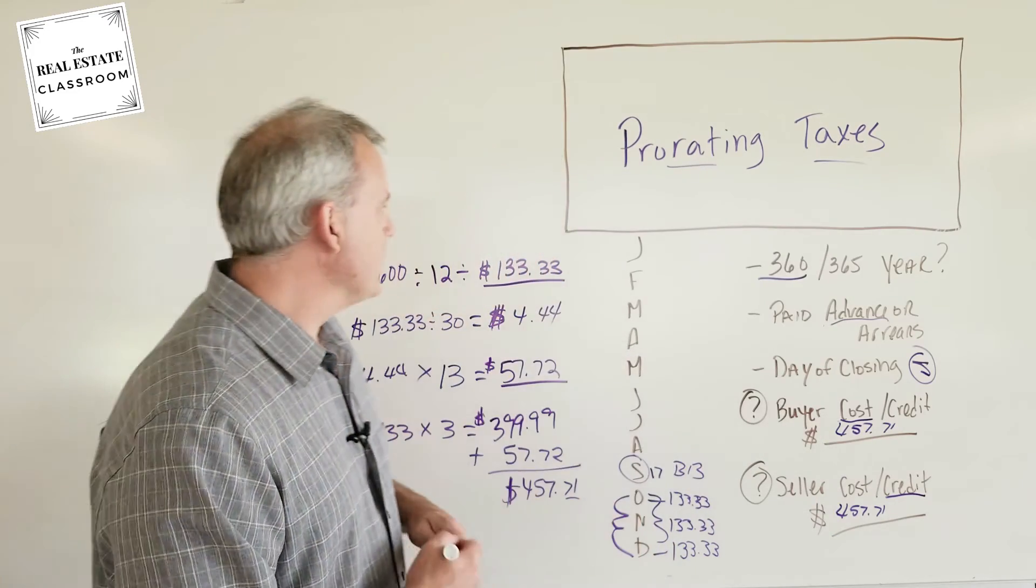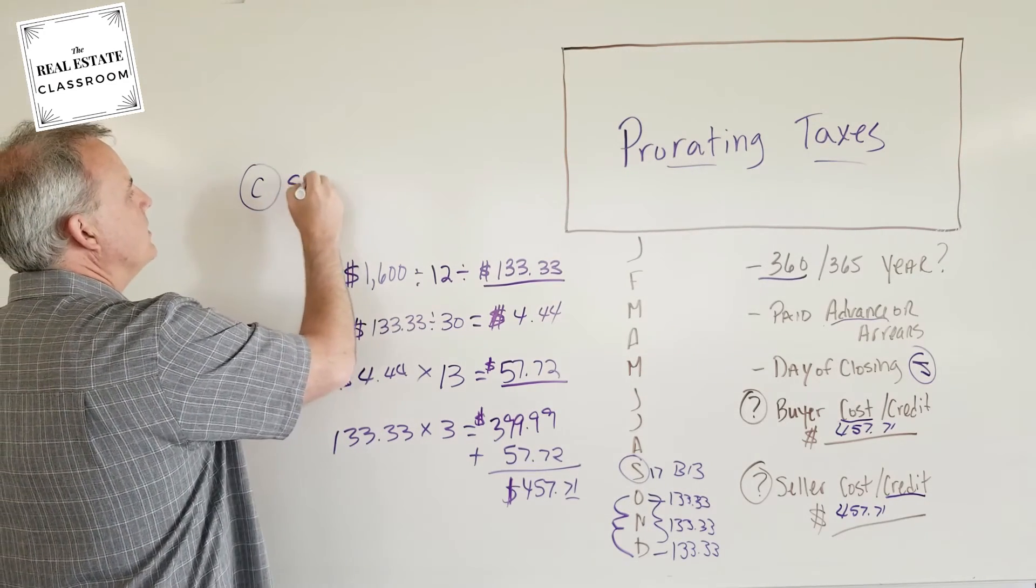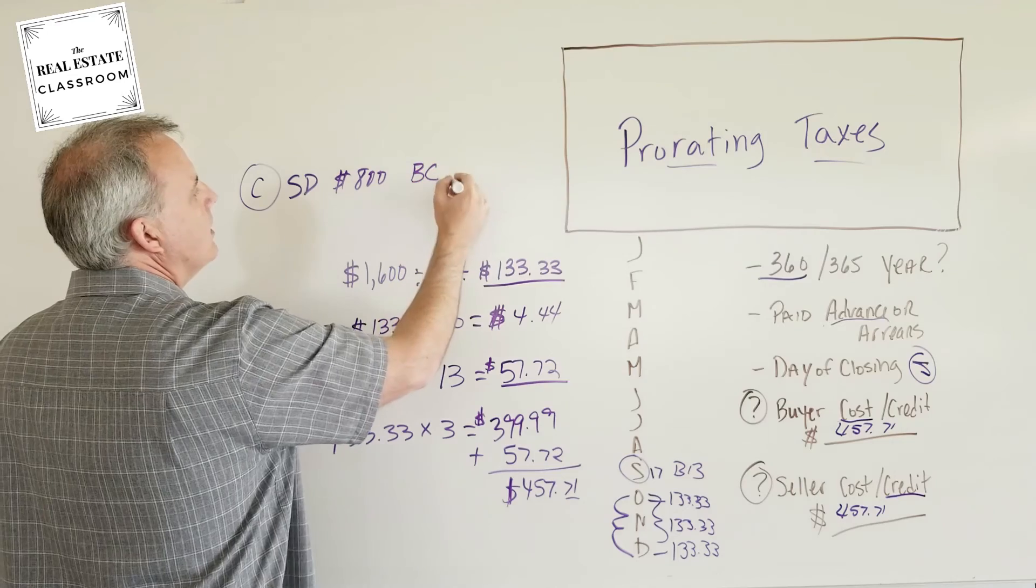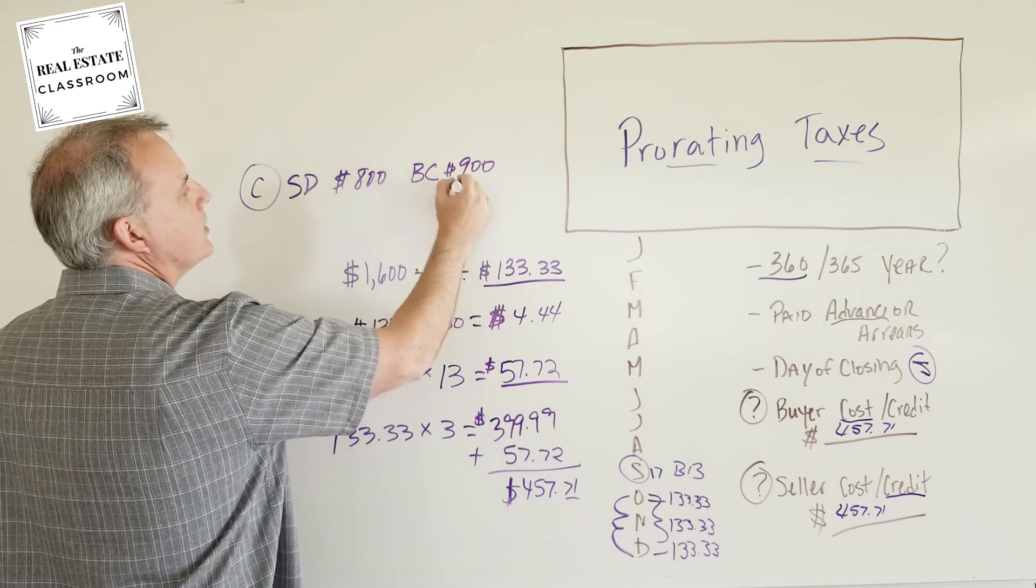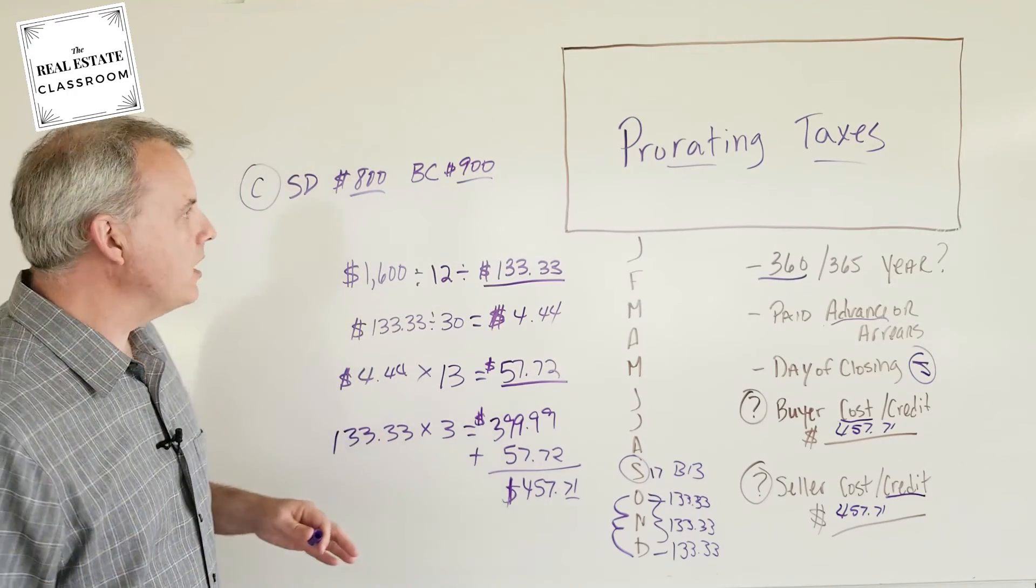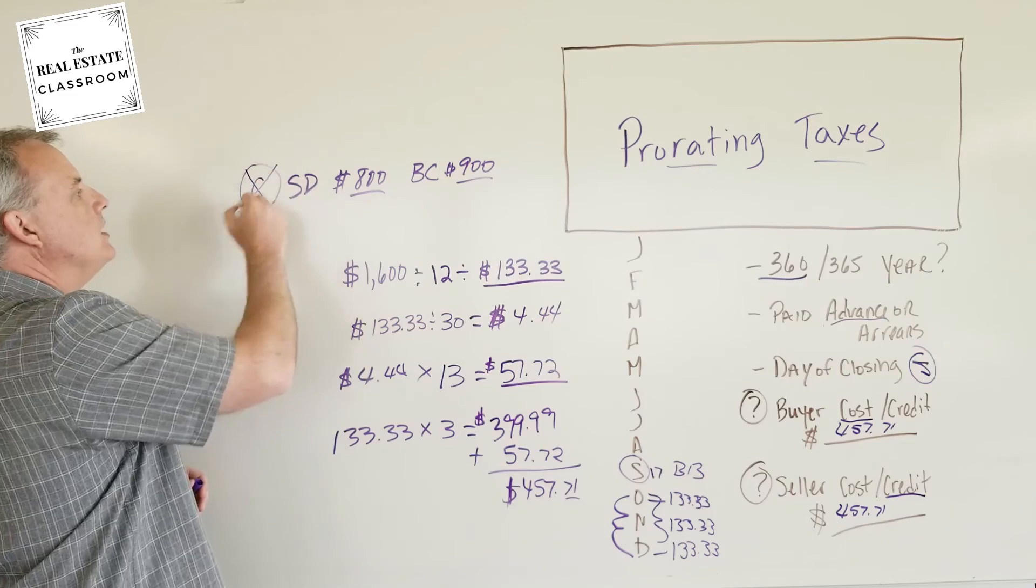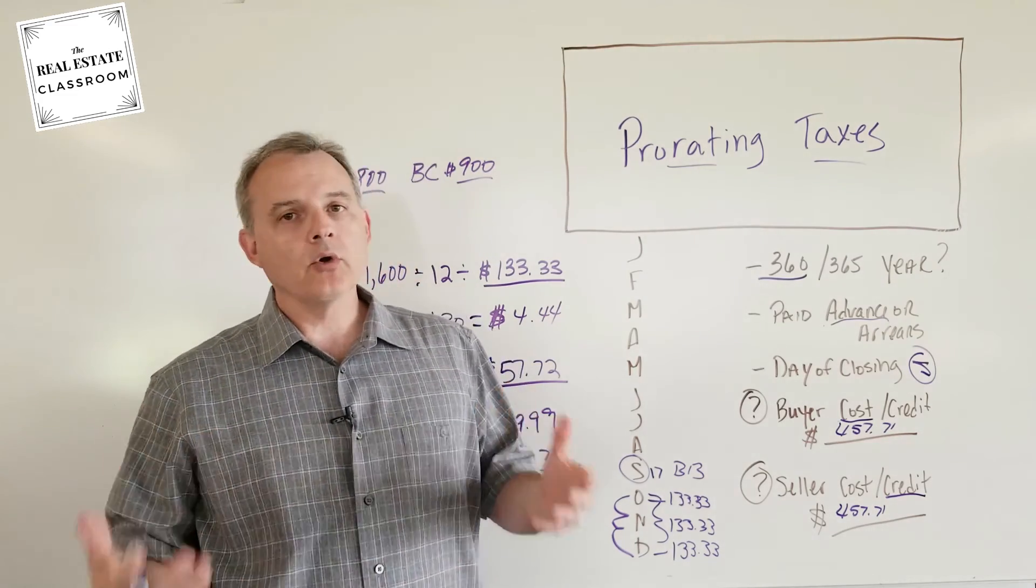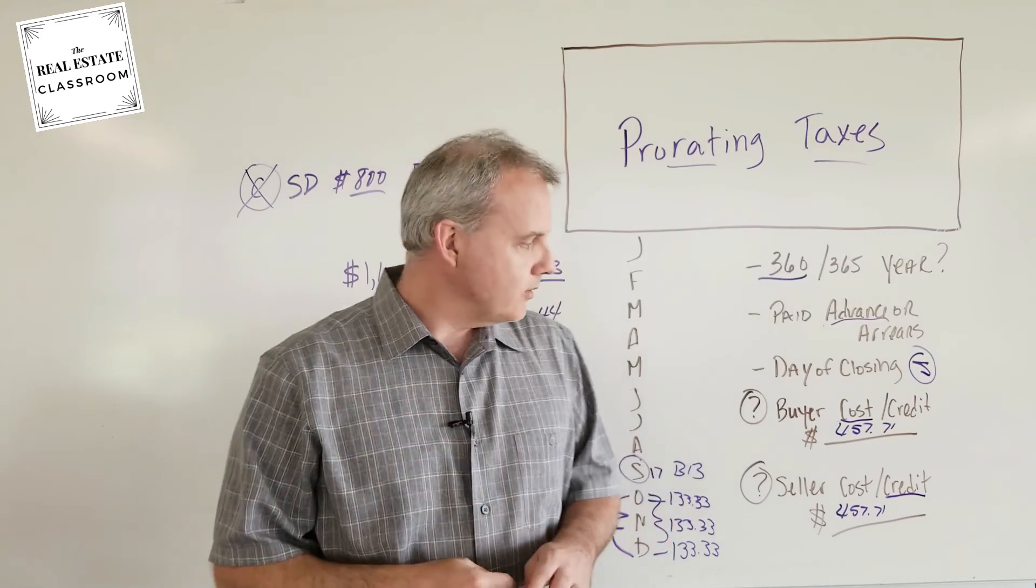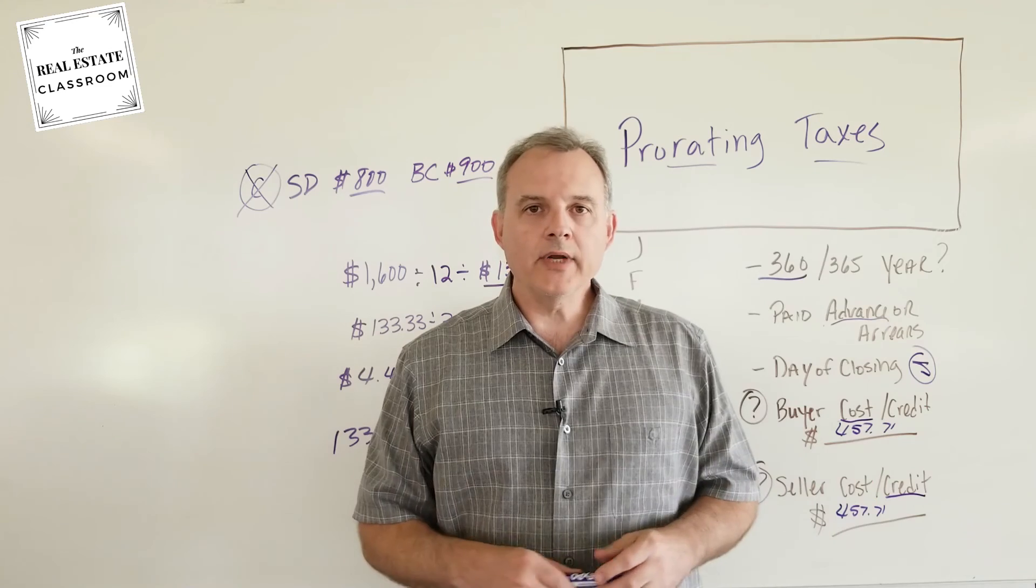I see this all the time from students that call me about their tests. One of the options they'll say is, let's say option C was a seller debit of $800 and a buyer credit of $900. Notice the two numeric values are different. When you're taking your real estate exam, if you see this on a proration question involving taxes or rent, you know automatically that C is not even a viable option for the correct answer. You can eliminate that one right away. So obviously it narrows your chance of getting the correct answer. So what we're looking for is matching numeric values here. There you have it. That is prorating taxes.